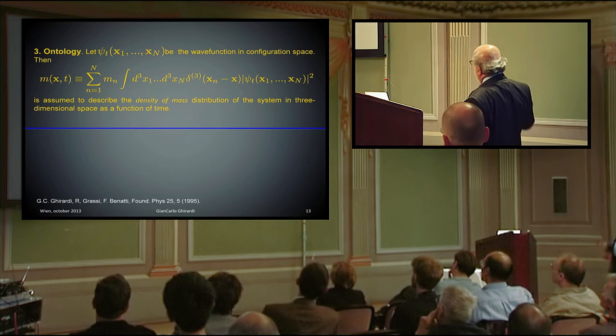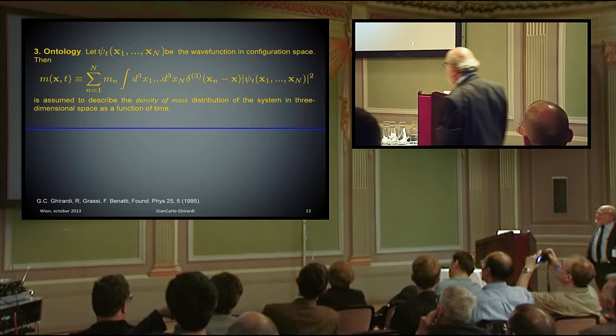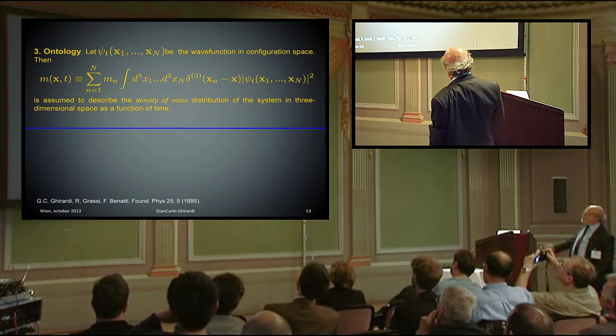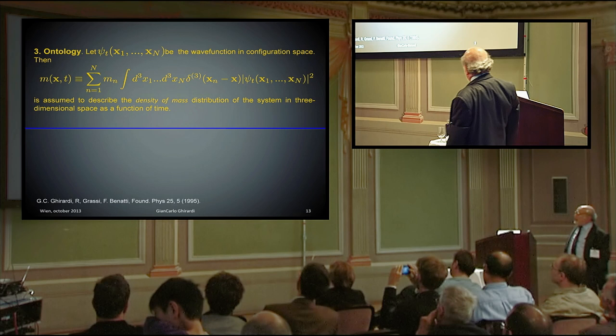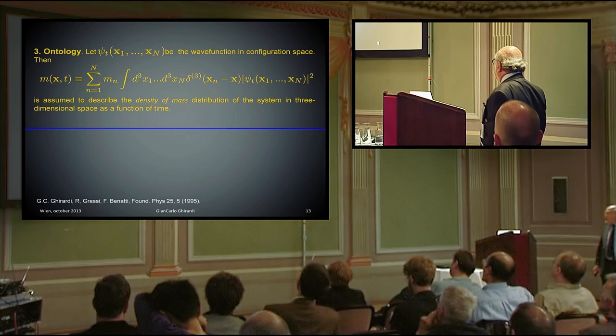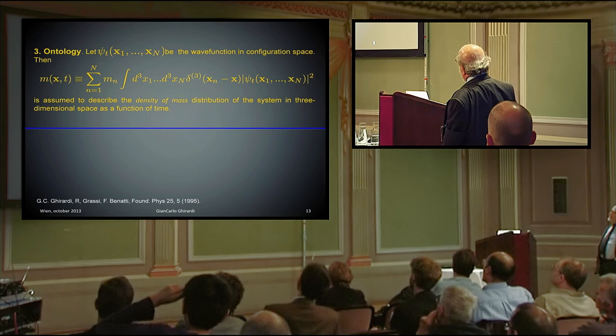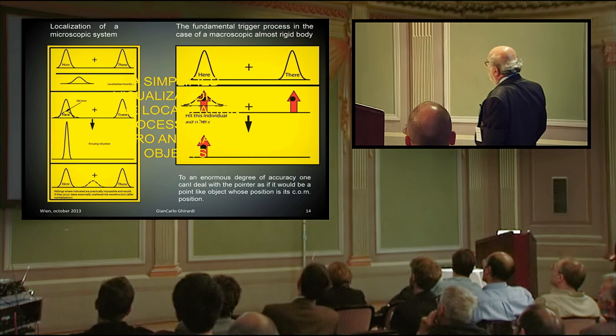If you want also the ontology, my friends always speak of ontology, particularly Professor Goldstein, so the ontology is that if psi of t is the wave function in configuration space, then you can take the modulus square of the wave function, you fix the n particle to the position x, you integrate over all the variables, multiplied by the mass of the n particle and sum over the particles. This is assumed to describe the density of mass distribution of the system in three-dimensional space as a function of time.